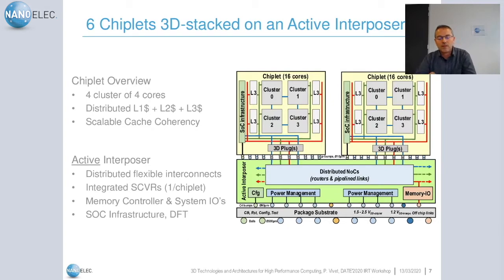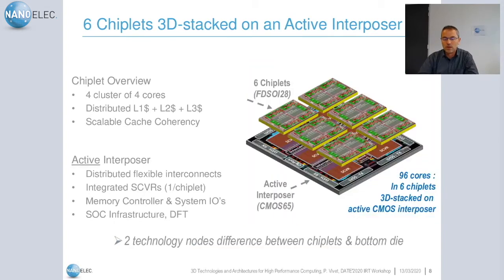We have designed a complete circuit called INTACT — an active interposer composed of six chiplets 3D stacked on it. Each chiplet contains four clusters of four cores, giving 16 cores per chiplet, with a distributed hierarchy of L1, L2, and L3 caches. The overall architecture provides a scalable cache-coherent memory hierarchy. The six chiplets are 3D stacked face-to-face onto the active interposer, which integrates distributed flexible interconnects, integrated switched-capacitor voltage regulators, memory IO controllers, and system IOs.